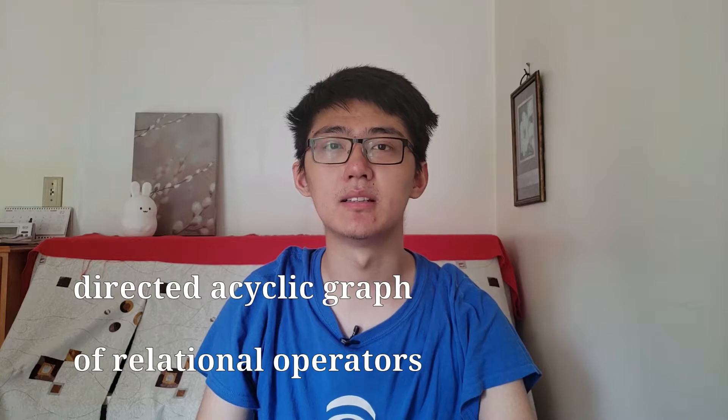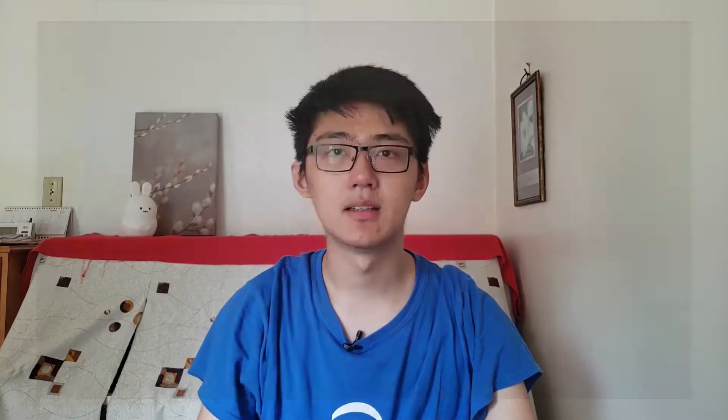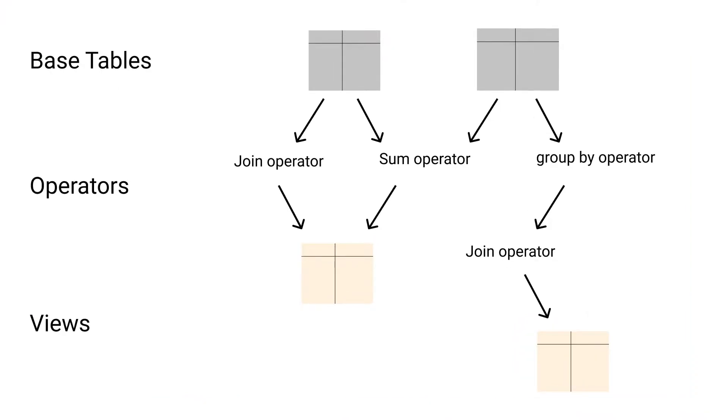There are two main ways of interacting with Noria: one is through the Rust bindings and the other is through a MySQL adapter. You can also manually query Noria using any MySQL client. Noria's dataflow system is implemented as a directed acyclic graph of relational operators, such as aggregations, joins, filters, and so on. The base tables are the roots of the graph and the views are the leaves. Any update starts at the base tables and propagates downwards. The data is held inside the operators and they're combined together to make the views. The operators can be either partially stateful or fully stateful, and while the base tables are stored in persistent storage, the views and operators are stored in system memory.